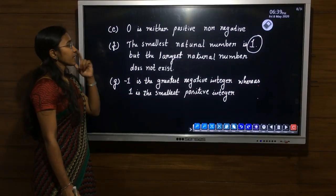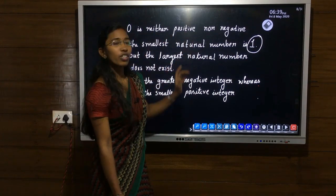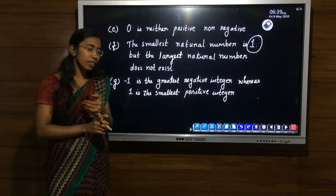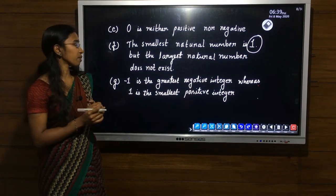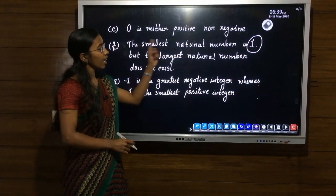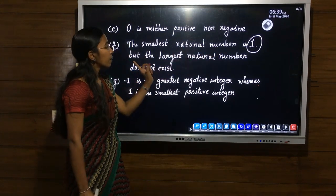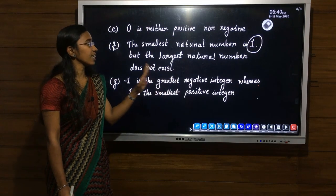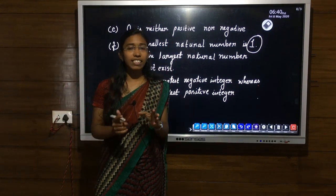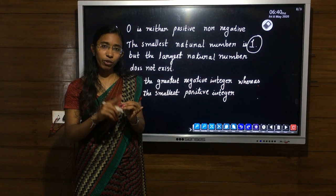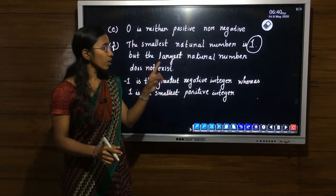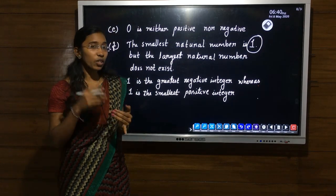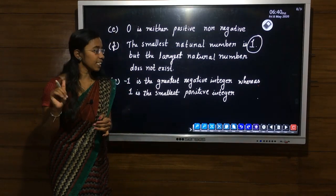Our next property: 0 is neither positive nor negative. That is very clear — 0 is not a positive number and also not a negative number. And the next property: the smallest natural number is 1 but the largest natural number does not exist. On a number line, the smallest natural number starts from 1, 2, 3, 4, etc. — we do not know which is the largest number.